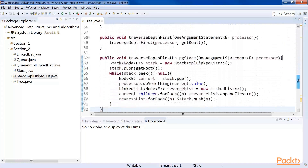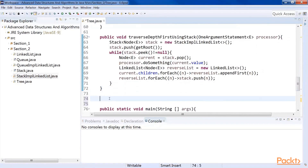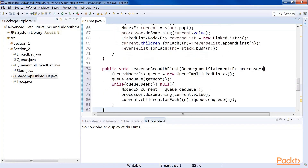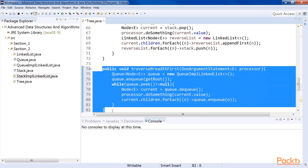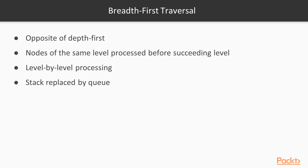Next is the breadth-first traversal. Breadth-first traversal is the opposite of depth-first traversal in the sense that depth-first traversal processes children before siblings, while breadth-first traversal processes the nodes of the same level before processing any node of the succeeding level. In other words, in a breadth-first traversal, the nodes are processed level by level. This is simply achieved by taking the stack version of the depth-first traversal and replacing the stack with a queue — that is all that is needed.